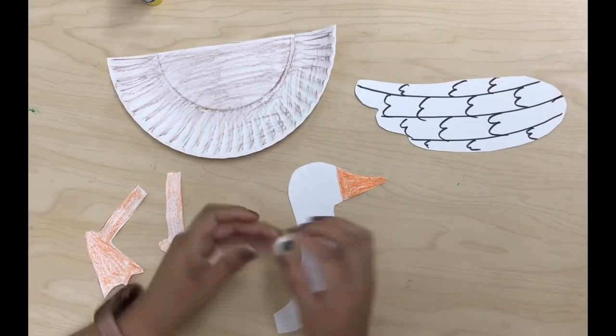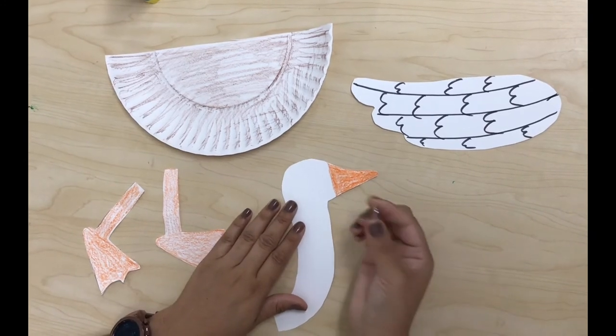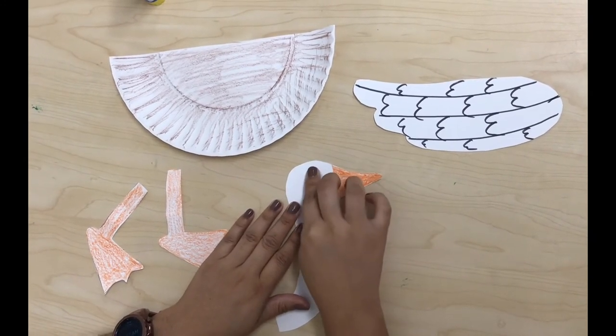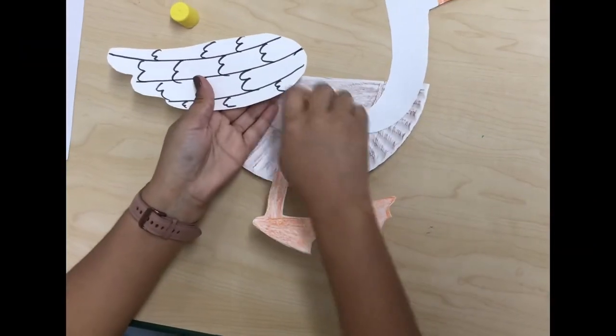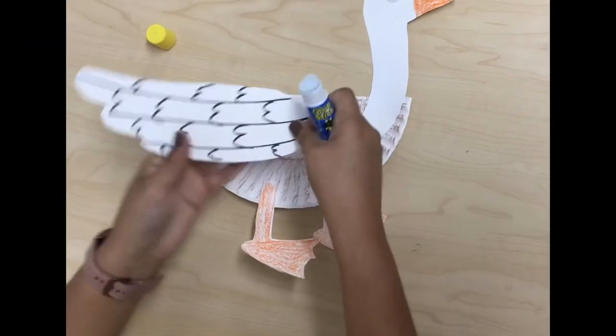Now we're going to glue the googly eye on the goose face. Then we're going to glue the wing on the body of the goose.